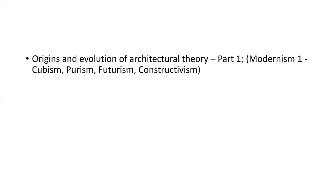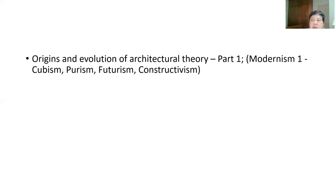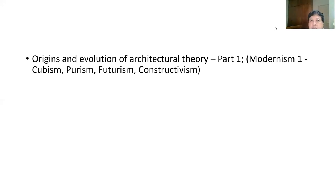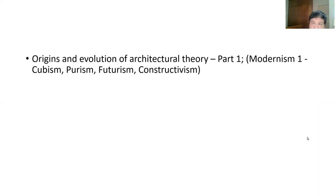So when we look at the Industrial Revolution, where are we now—we are actually in the information age. We cannot deny the influence that the art movement or modern art movement had on architecture theory. And these are some of the isms: Cubism, Purism, Futurism, and Constructivism, that influenced the thoughts of architects during that time, the turn of the century.